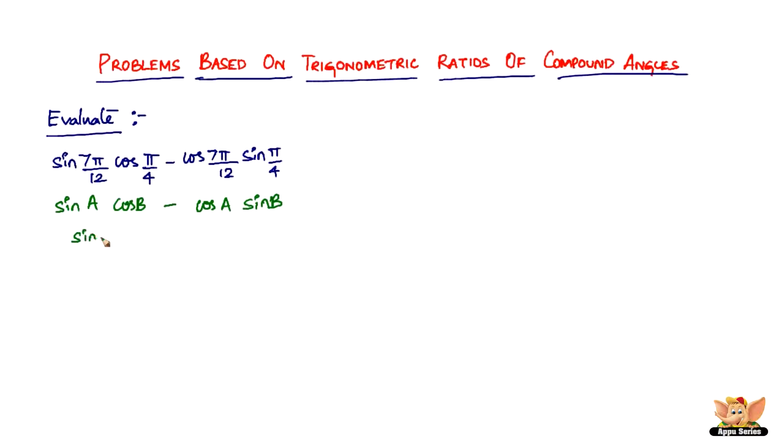This is nothing but sine of A minus B, right? So all we have to do is just substitute, so sine of A is 7π by 12 minus B is π by 4.